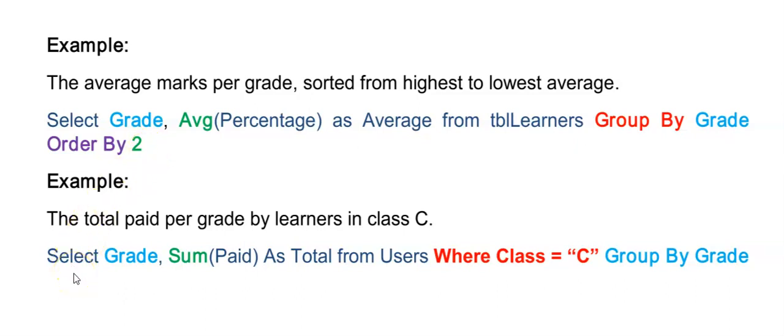Here's another example. Let's say I had to calculate the total amount paid per grade or for each grade, but only for the learners in class C. So I'm displaying the grade. I'm adding up what they've paid, displaying the heading total from a table called users. But it's only adding up for the records where the class fields value was C. And remember now that I have a select where I'm displaying a field with an aggregate function, I need to group by this grade here. So that's why I'm saying at the end group by grade.